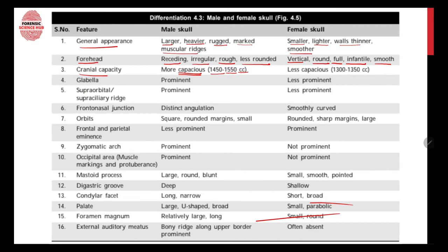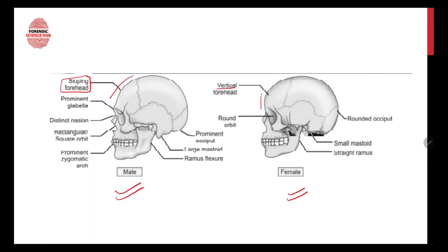Regarding cranial capacity, the male skull is more capacious with 1450 to 1550 cubic centimeters, whereas the female skull is less capacious at 1300 to 1350 cubic centimeters. You need to remember all these points, as questions can be asked about any feature — whether it is prominent in a male or female skull — so know each and every difference.